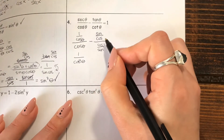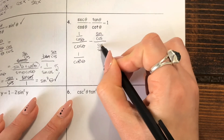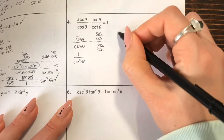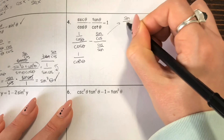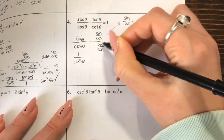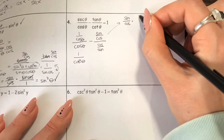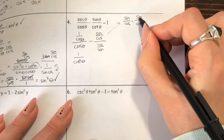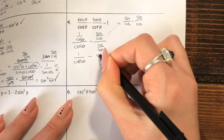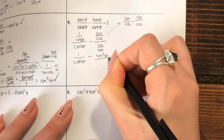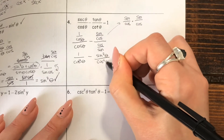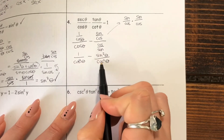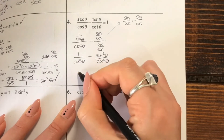And then here we have one fraction divided by one fraction, so we can do keep-switch-flip. Keeping sine over cosine and multiplying by the reciprocal — sine goes to the top and cosine goes to the bottom. So we end up getting sine times sine, which is sine squared, and cosine times cosine, which is cosine squared. Lucky for us, we have that common denominator, so we can go ahead and subtract those fractions. On the top I get one minus sine squared over cosine squared.